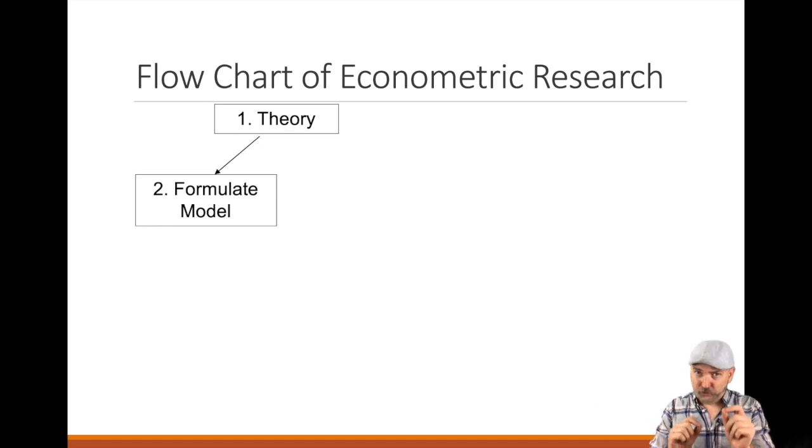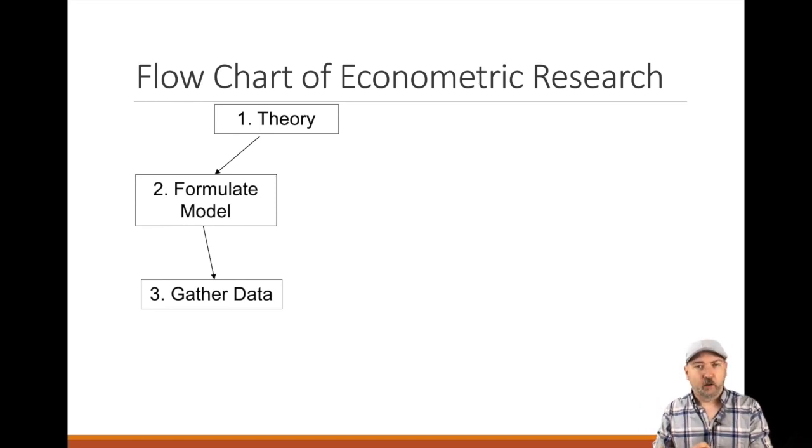Notice that steps one and two, thinking deeply about the theory, formulating a process that we believe explains what we're looking at, and then formulating a specific ideal mathematical equation, none of this involves data at this point. We haven't looked at a single observation of data, let alone doing any analysis. But that's where we're going next. Once we formulate that model, we know what we're looking for, then we've got a good idea of what the ideal data set is going to look like.